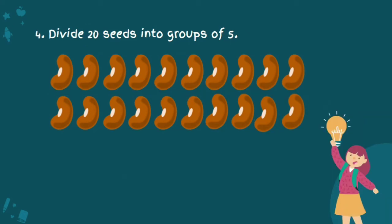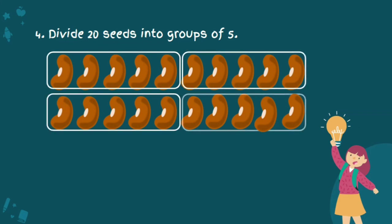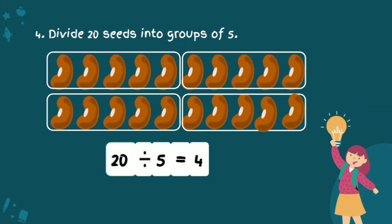This is the last example. Divide 20 seeds into groups of 5. Now, groups of 5 means one group has 5 seeds. Let's circle 5 like this. Until finish. How many groups are there? 4. So 20 divided by 5 is equal to 4. There are 4 groups of 5 seeds.